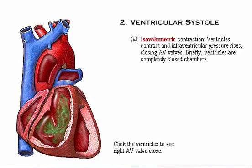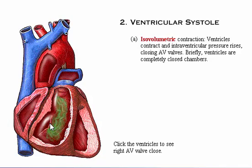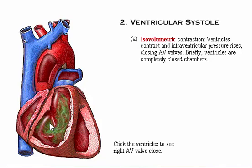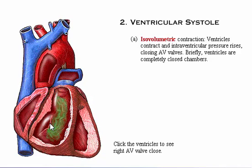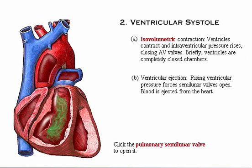Click the ventricles to see them contract and to see the right AV valve close. The ventricular ejection phase begins when rising ventricular pressure forces the semilunar valves open. Blood is then ejected from the heart into the pulmonary trunk and aorta.